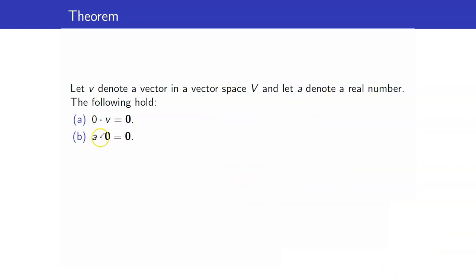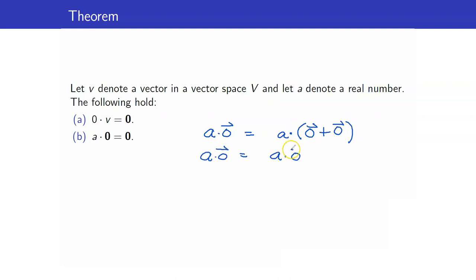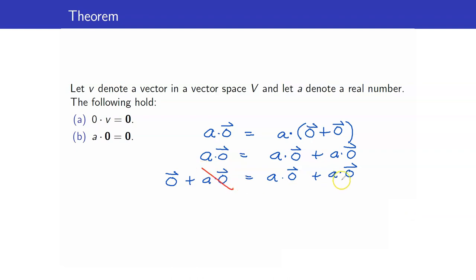Next, if we have any scalar and multiply it to the 0 vector, we should get the 0 vector. Similarly, I write a·0 as a times (the 0 vector plus the 0 vector), which by distributivity gives a·0 plus a·0. I write the left-hand side as the 0 vector plus a·0, and again I can utilize the cancellation law to cancel a·0 on both sides. Hence, the 0 vector equals a·0.